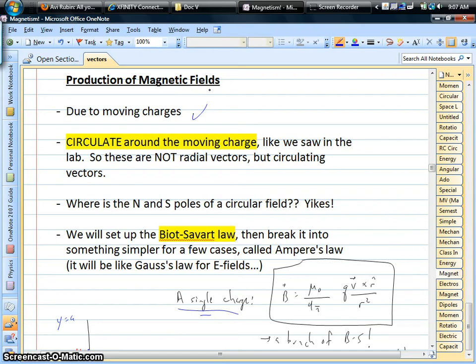And what's also kind of weird about this, and we've seen in the lab, is the fact that these magnetic fields don't radiate from the moving charges, but rather they circulate around the moving charges. When you put compass needles around a wire that's carrying a current, those compass needles all point tangent to some circle, and that's the circulating magnetic field.